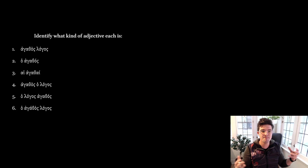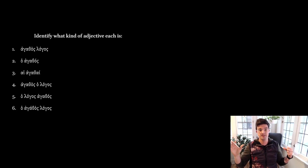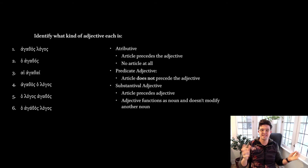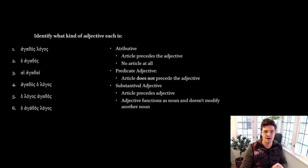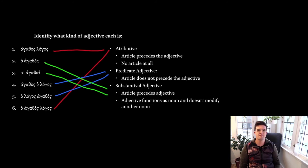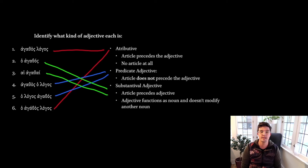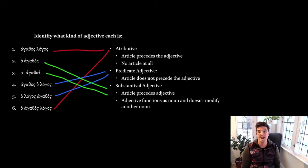Let's do this again — the examples are mixed up and the labels removed. Pause the lecture and identify what use each adjective represents, then self-correct before checking. After mixing them up, the answers are: numbers one and six are attributive — in number one there is no article ('a good word'), and in number six the article precedes agathos. Numbers four and five are predicate adjectives with no article before agathos but with an article before logos. Numbers two and three are substantival adjectives, functioning as the nouns themselves.